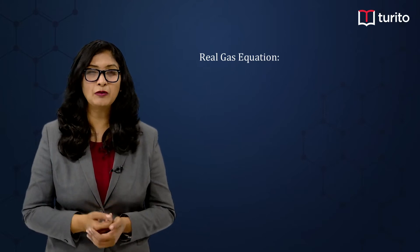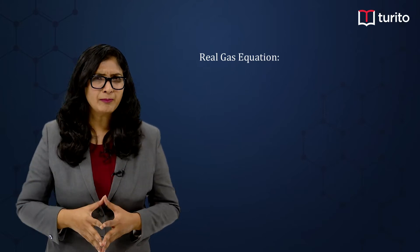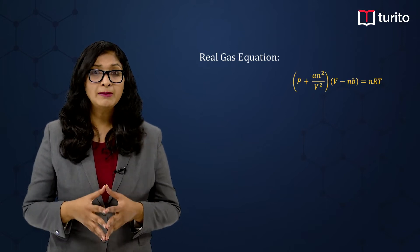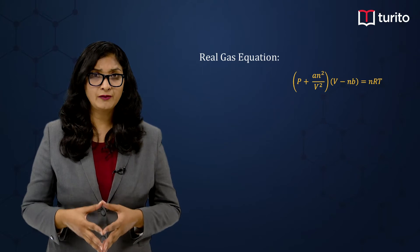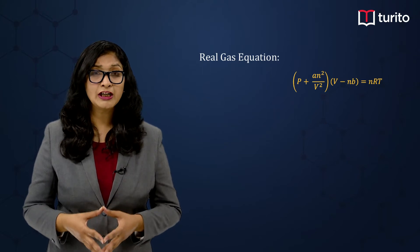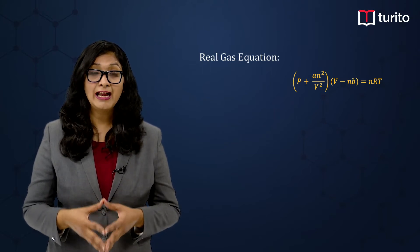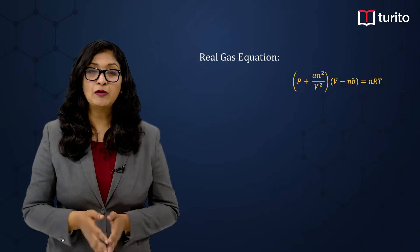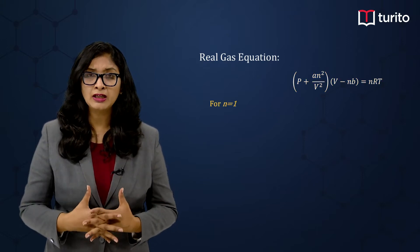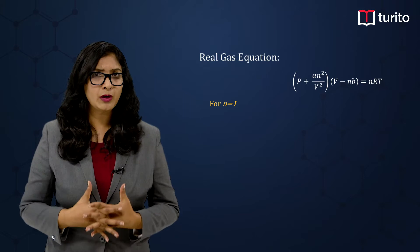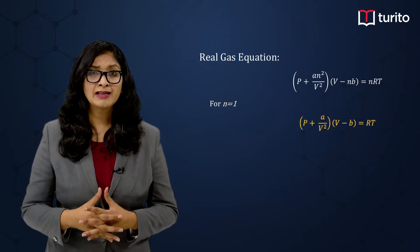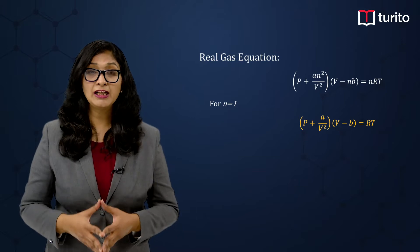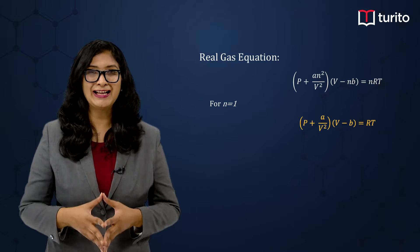If you remember, the real gas equation is: (P + an²/V²)(V − nb) = nRT. Now if n = 1, the same equation becomes: (P + a/V²)(V − b) = RT.